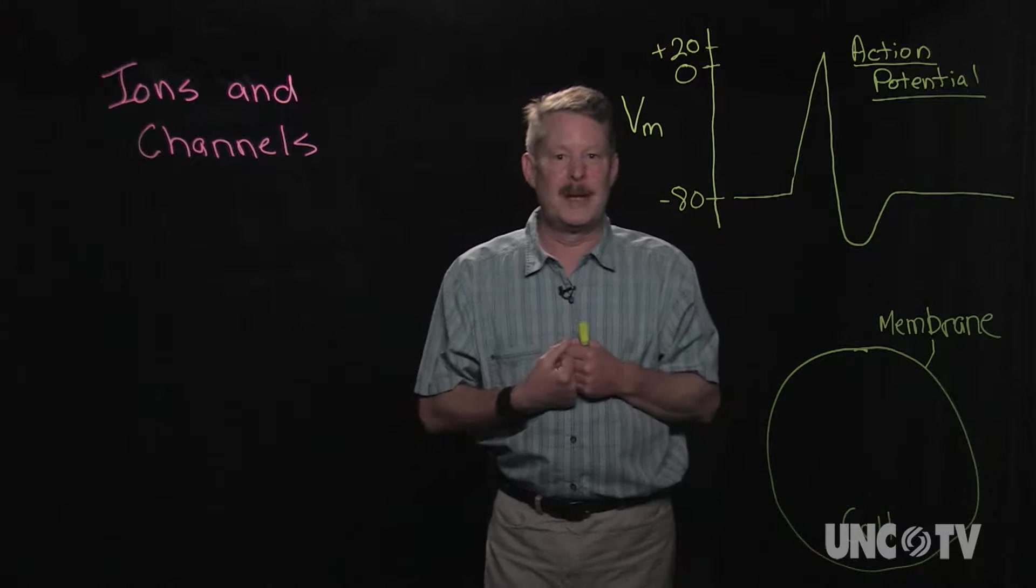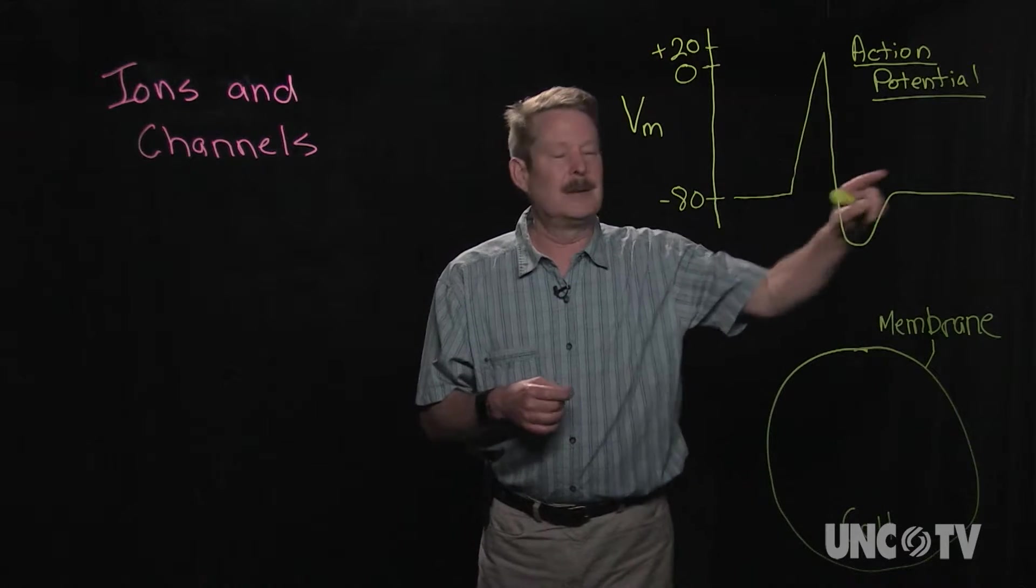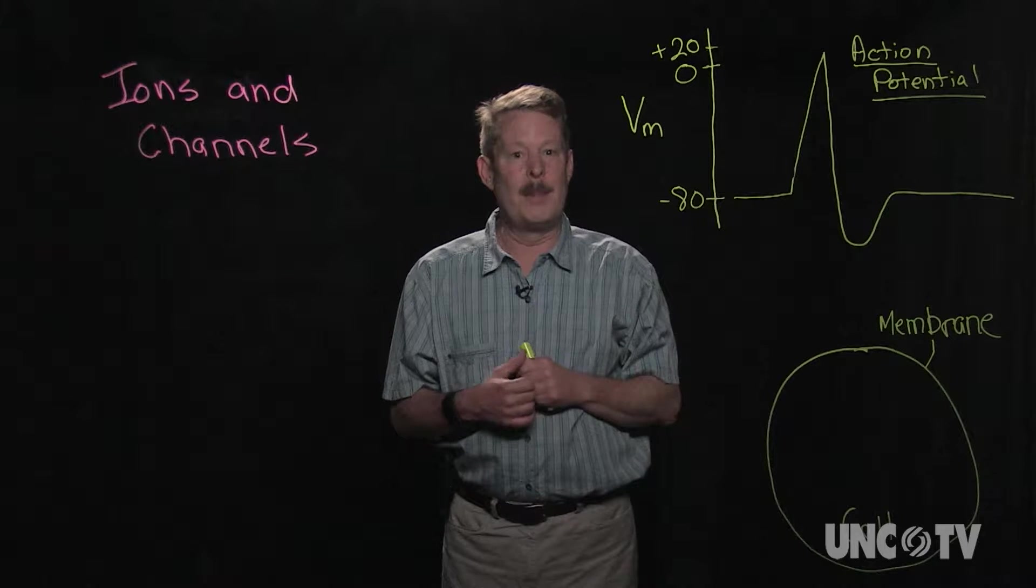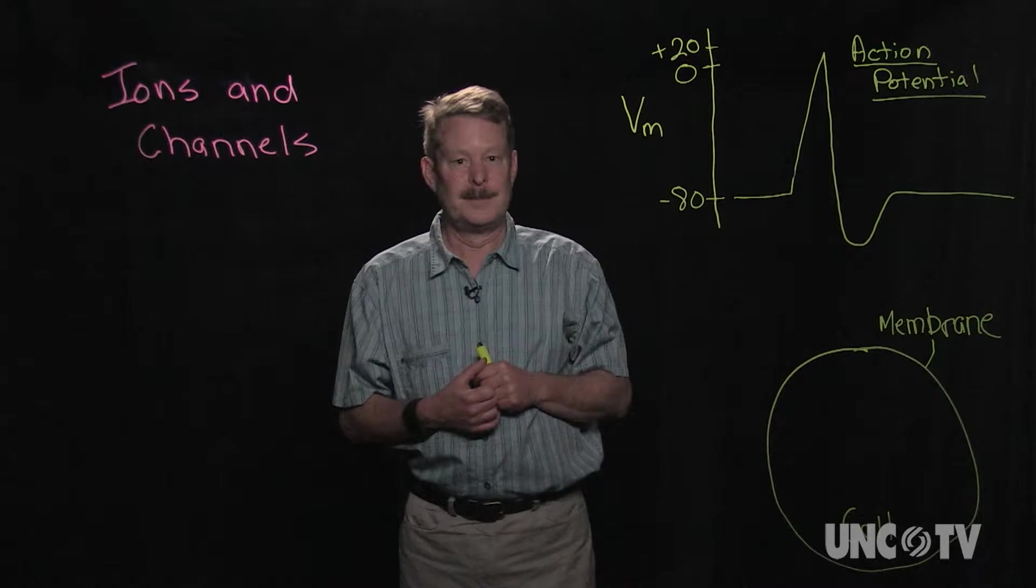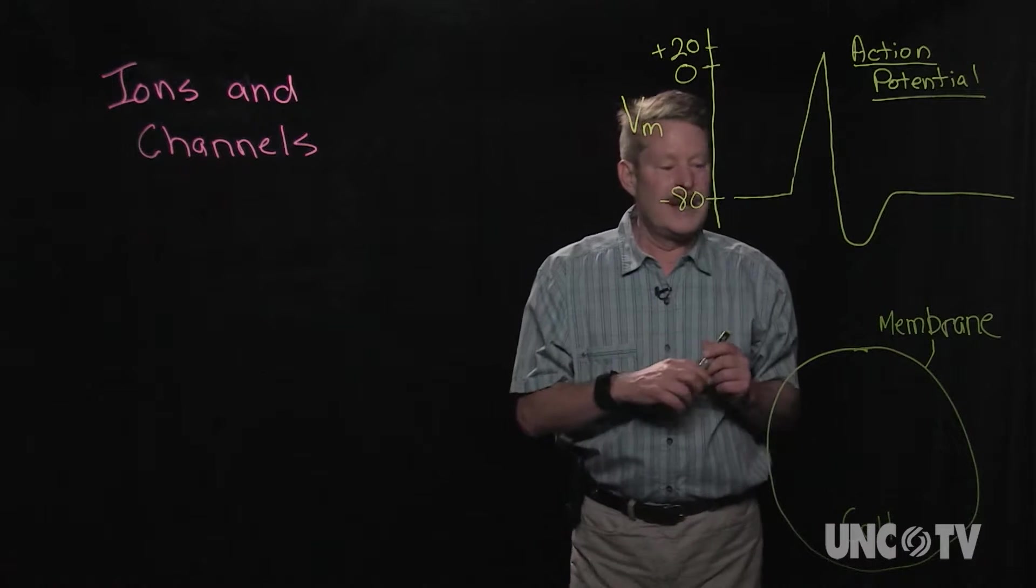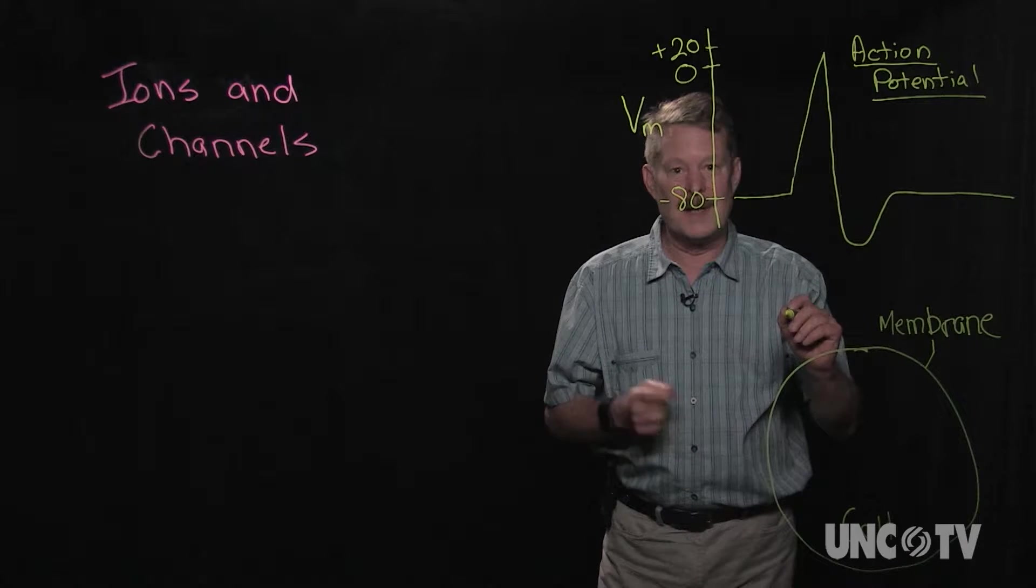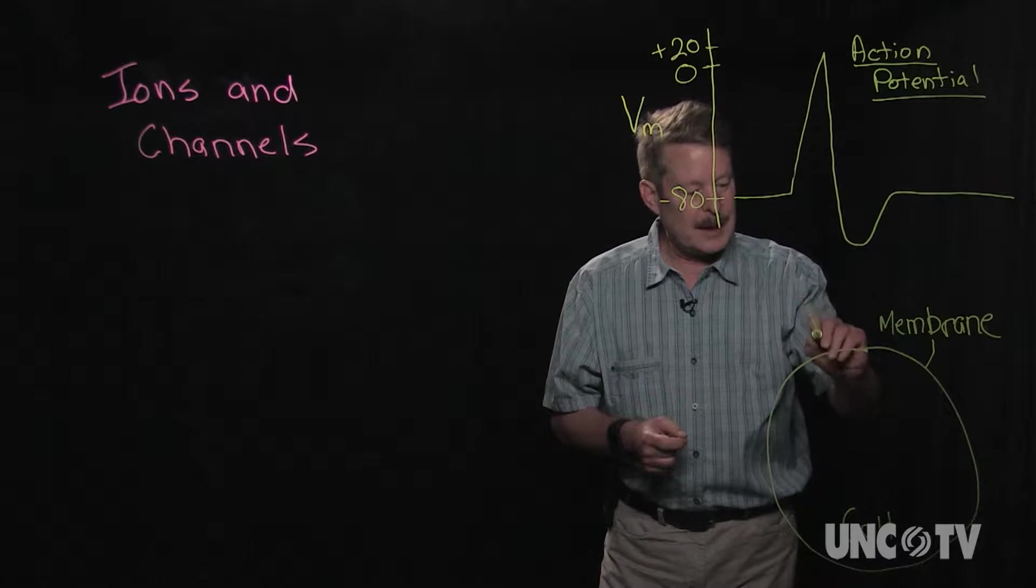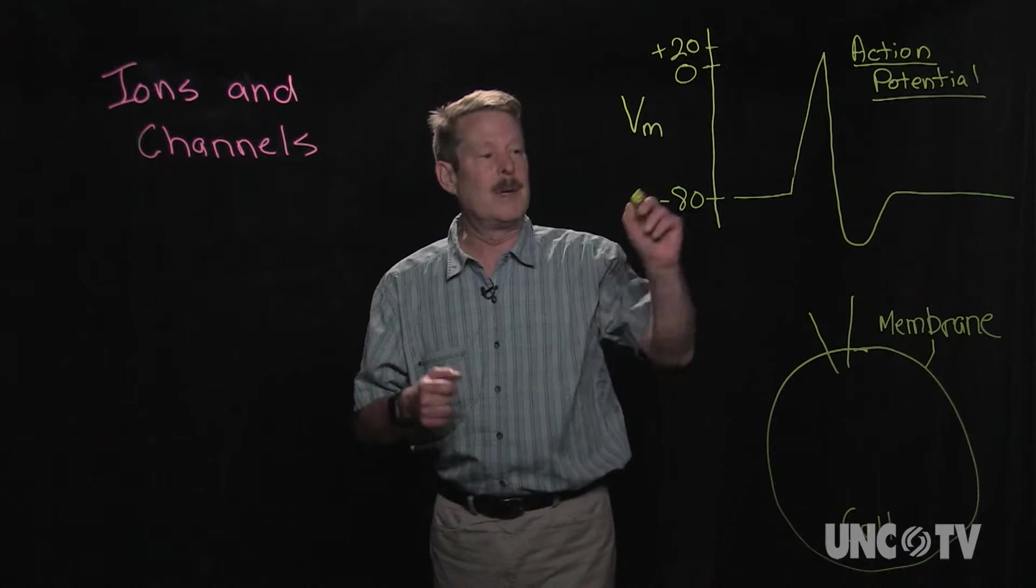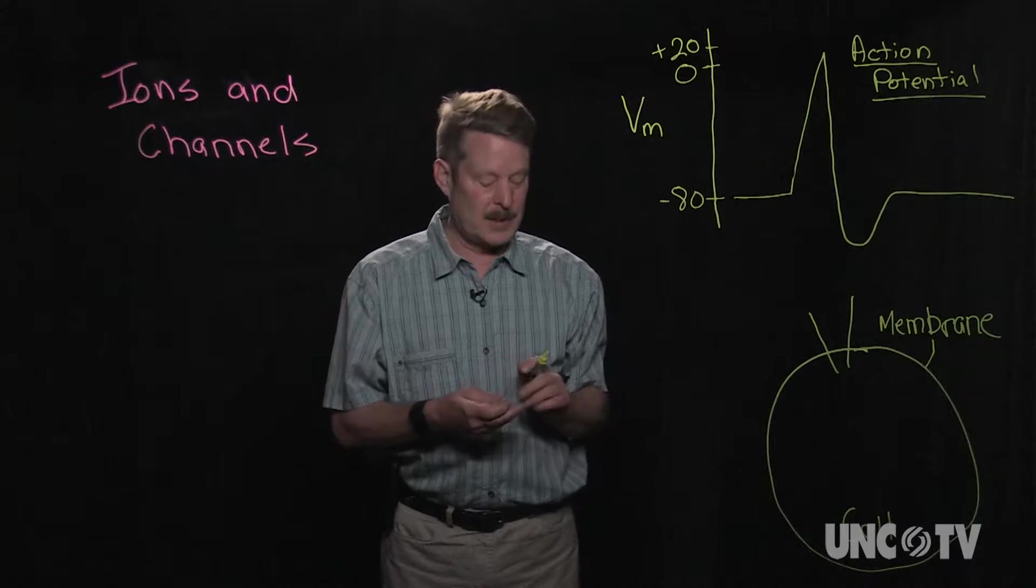What is the action potential? The action potential is drawn here, it's outlined here, it's simply a change in the membrane potential. So what is the membrane potential? The membrane potential is a potential difference across the membrane of a cell. We can measure that if we put an electrode into the cell, and we can measure the changes in that membrane potential.